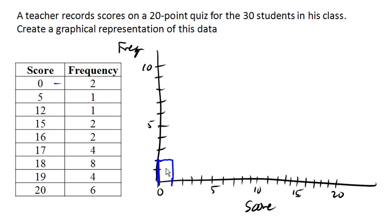And so our next score here has a frequency of 1, but it has a score of 5. So it's way over here. There's a big empty space here in our graph corresponding to all those scores that didn't show up. Our next is a score of 12, also with a frequency of 1.